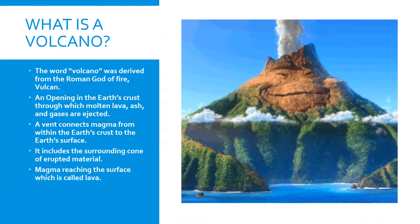What is a volcano? The word volcano was derived from the Roman god of fire, Vulcan. It is an opening in the earth's crust through which molten lava, ash, and gases are ejected. A vent connects magma from within the earth's crust to the earth's surface. It includes the surrounding cone of erupted material, with magma reaching the surface being called lava.